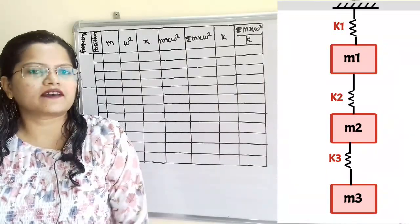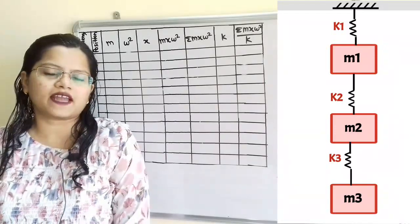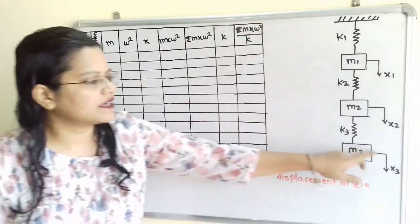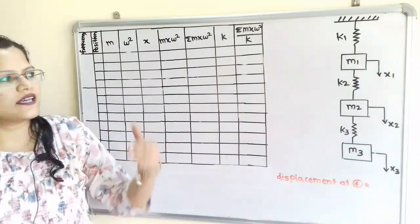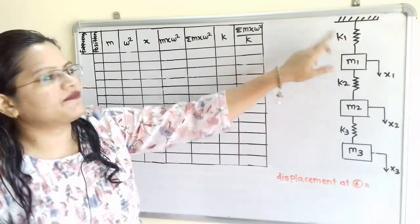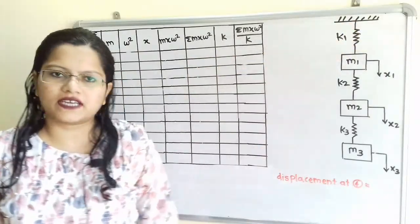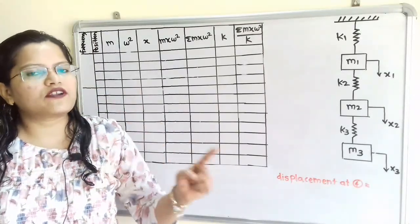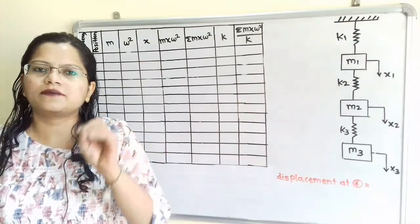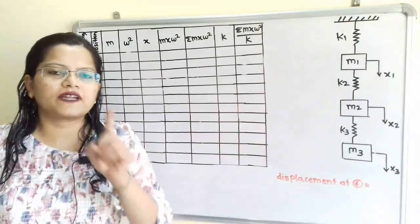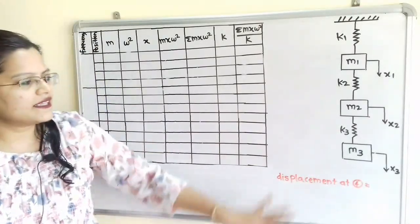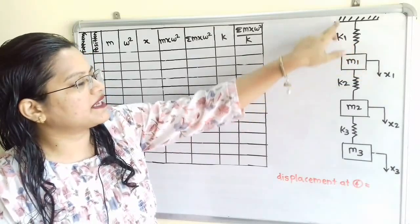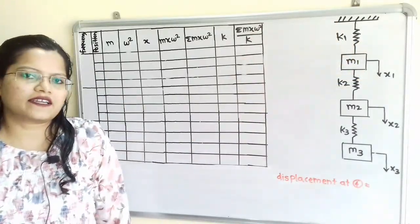Now let us understand whether this system is semi-definite or not. If we observe this system, at one end there is mass M3 with displacement X3, but at the other end there is a spring with stiffness K1 connected to the fixed end. A system is semi-definite when on both sides there are masses, making one frequency always zero. But in this case, the system is not semi-definite because one end has a spring connected to a fixed end.